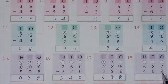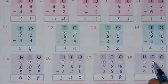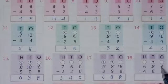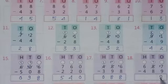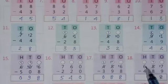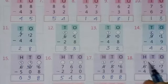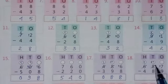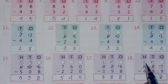Here 7 minus 9 is not possible, so borrow from this digit — this will become 7 and here will be 17. Now 17 minus 9 equals 8. Then 7 minus 8 is not possible, so borrow from this digit — this will become 5 and here will be 17. Now 17 minus 8 equals 9. 5 minus 4 equals 1.